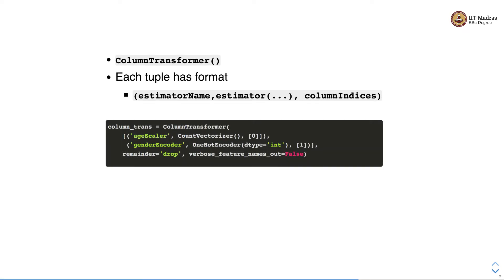It combines different feature selection mechanisms and transformations into a single transformer object. Let's look at a concrete example of how to specify the ColumnTransformer. We instantiate an object of ColumnTransformer by specifying the name of the transformer, the actual transformer being instantiated, and the column index on which the transformer is to be applied.